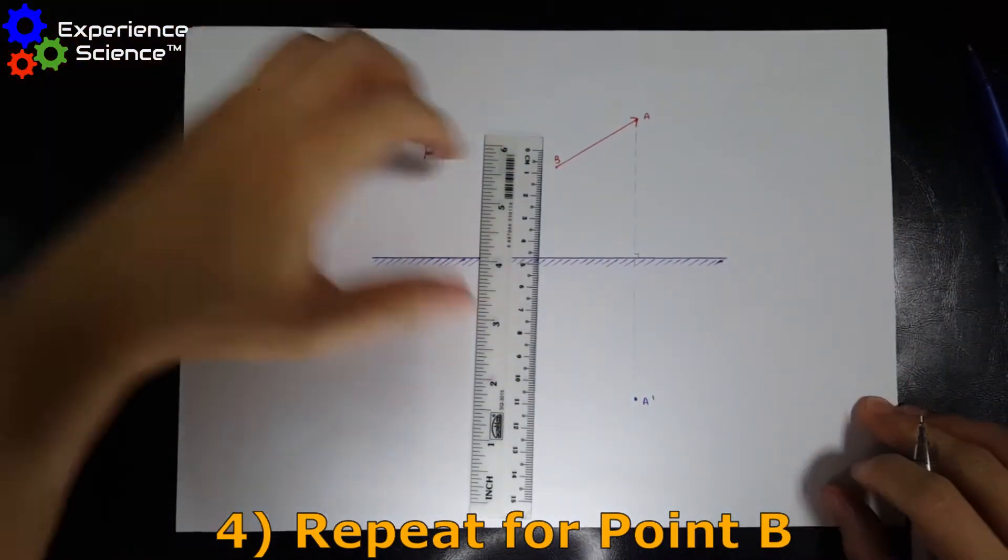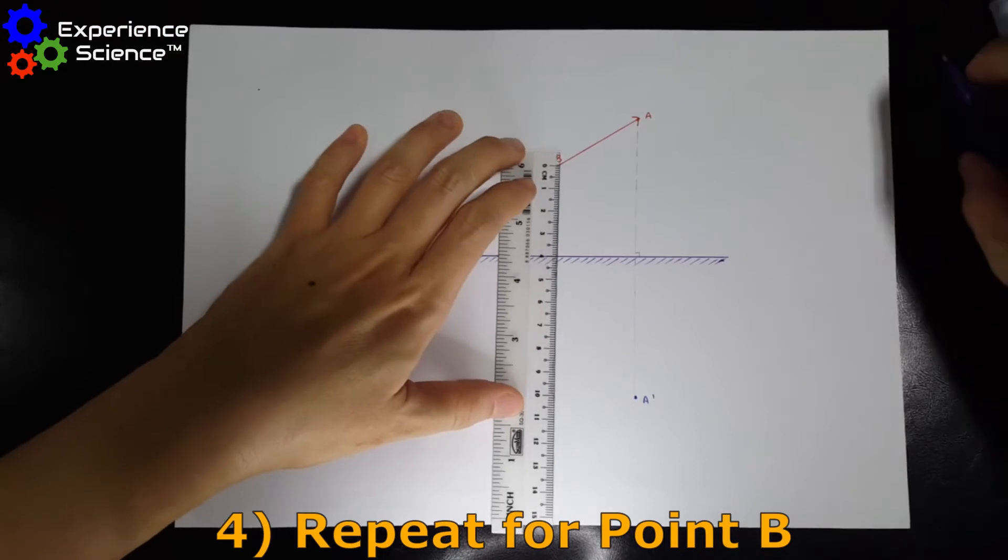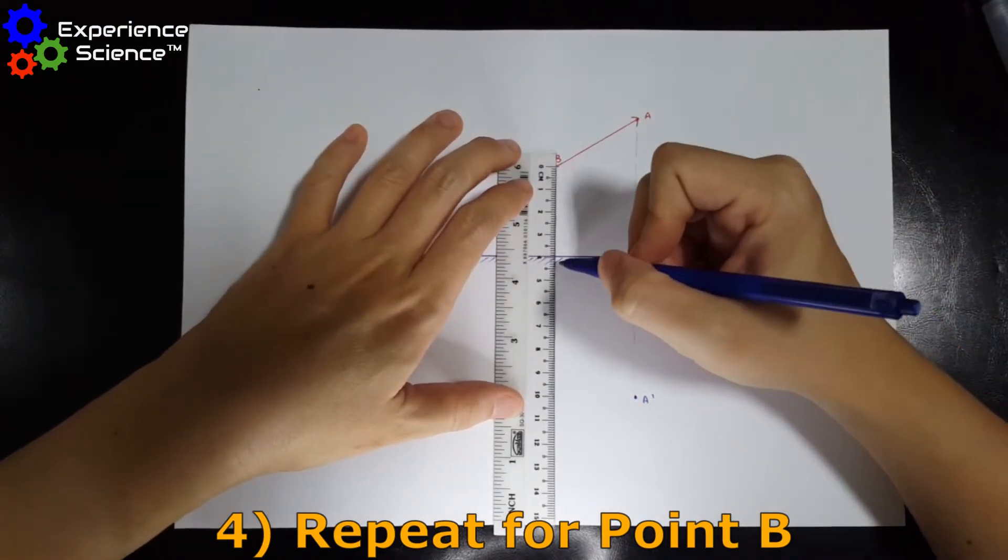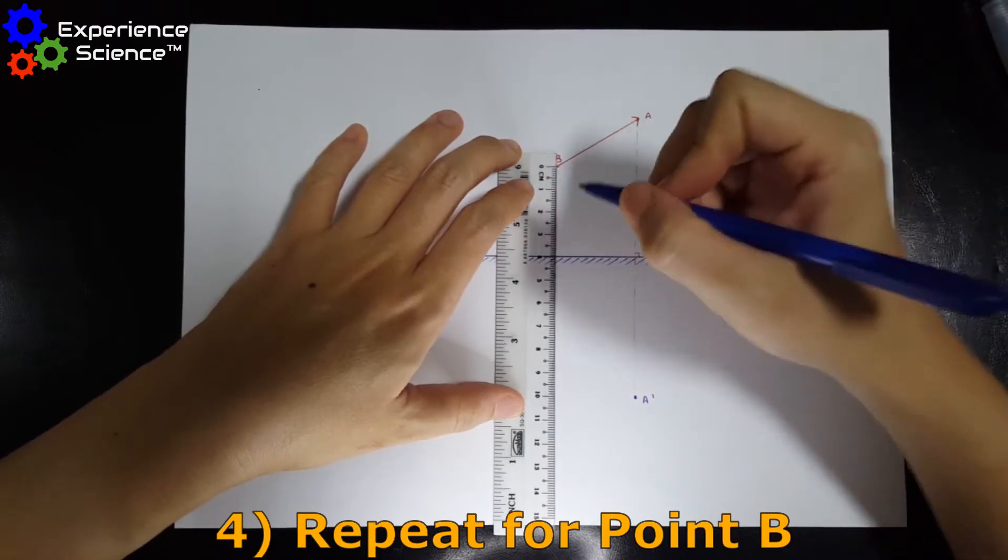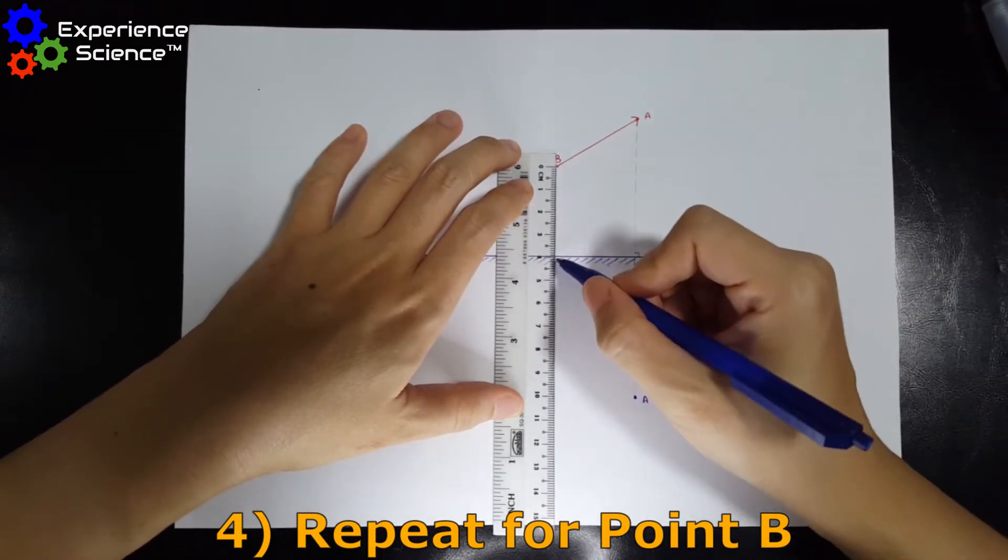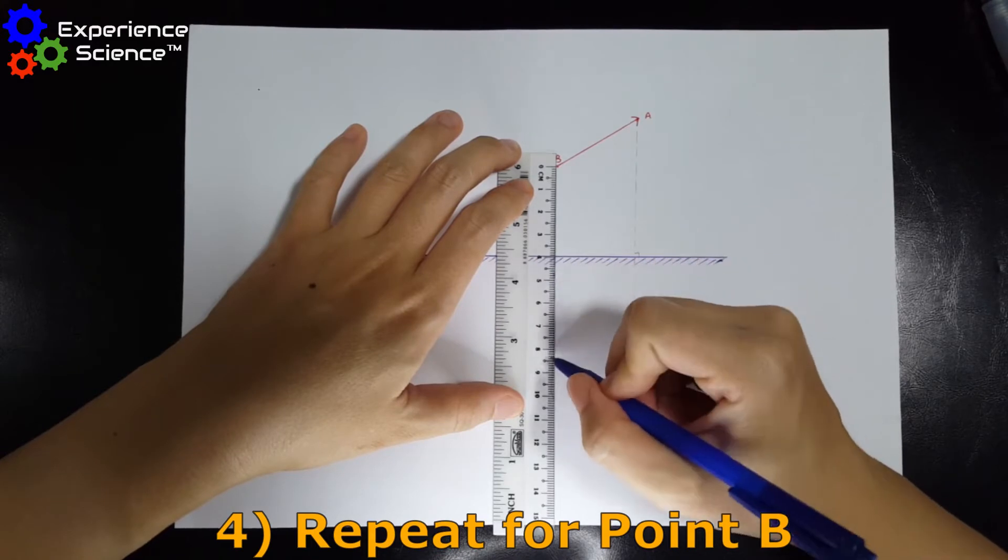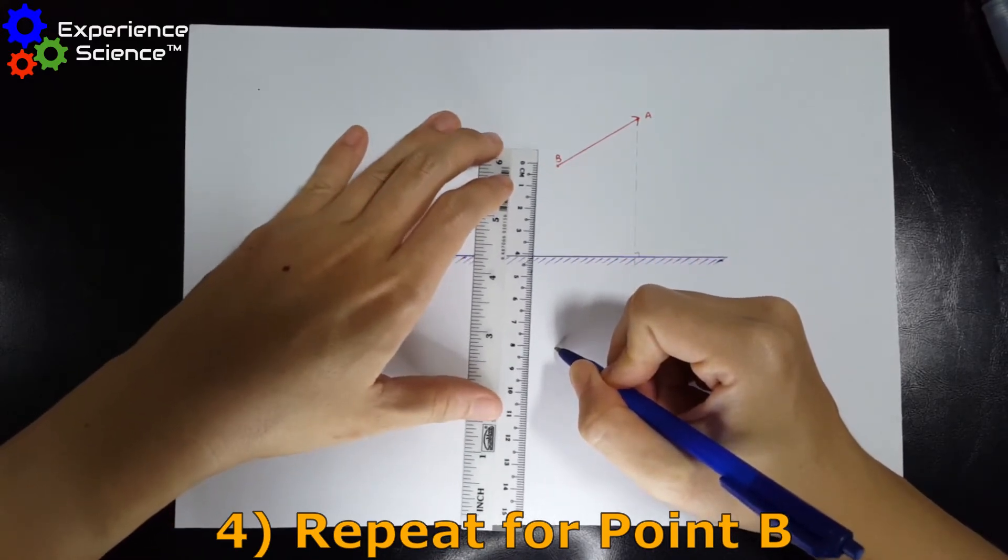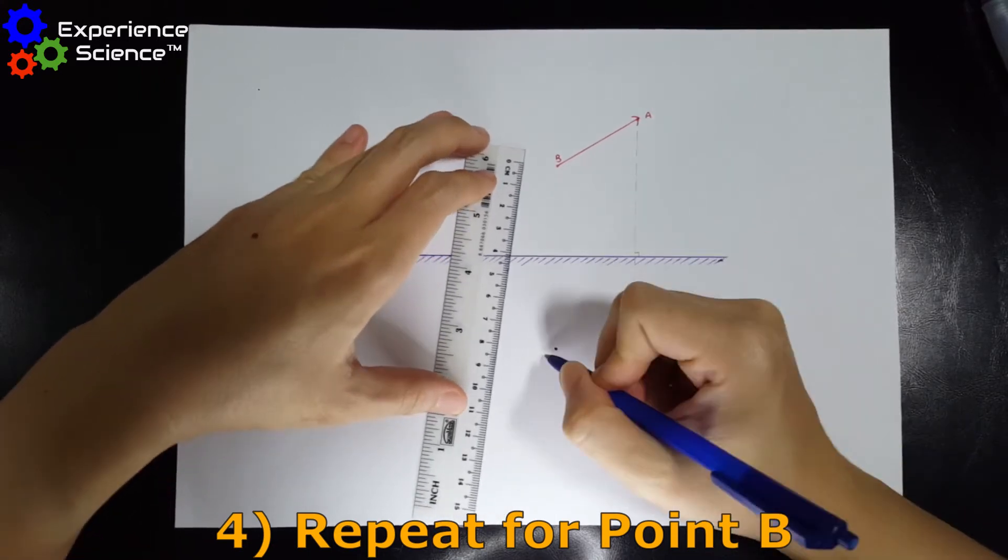Now we do the same for B. The perpendicular distance of B to the mirror is 4 cm. And so the image of B should be 4 cm away from the mirror and that means we measure up to 8 cm here and we draw it.